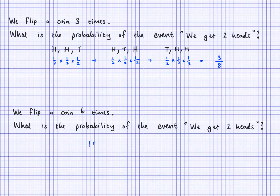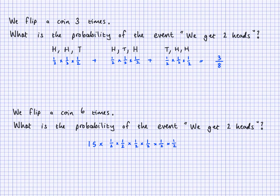Since there are 15 arrangements, we calculate: 15 × (probability of two heads) × (probability of four tails). Two heads: 1/2 × 1/2. Four tails: 1/2 × 1/2 × 1/2 × 1/2. Each trial is independent, so getting a head or tail each time is 1/2. The 15 accounts for all the different ways to arrange the two heads and four tails.